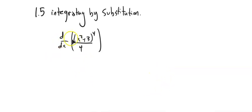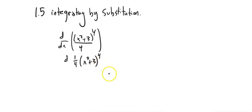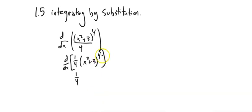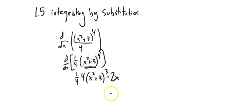Before we do, I want to do this derivative, and then we'll try to undo the derivative by integrating. I'm going to think of this as 1/4 times (x² + 3) to the 4th power, and then take the derivative of that. I'm doing this to see where the pieces come from. Notice I have a function inside a function — x² + 3 inside the 4th power — so I'm going to have to do a chain rule. So I have 1/4 times 4 times (x² + 3) to the 3rd power times the derivative of what's inside, which is 2x. 1/4 times 4 is 1, so I end up with (x² + 3)³ times 2x.